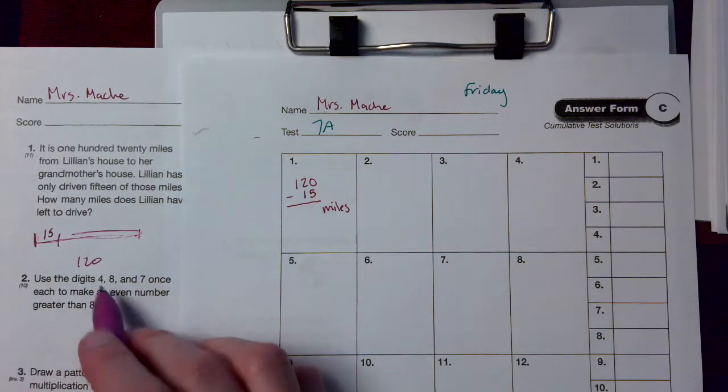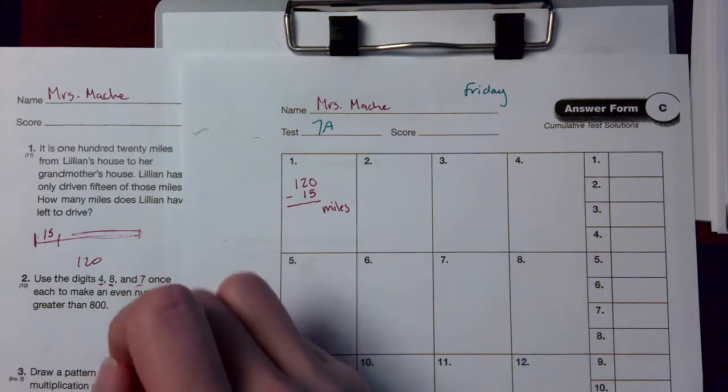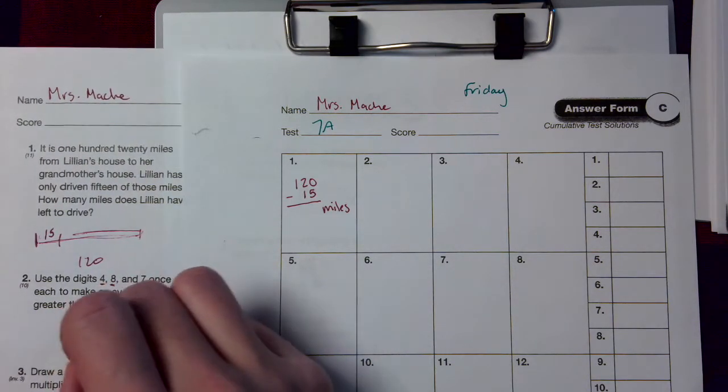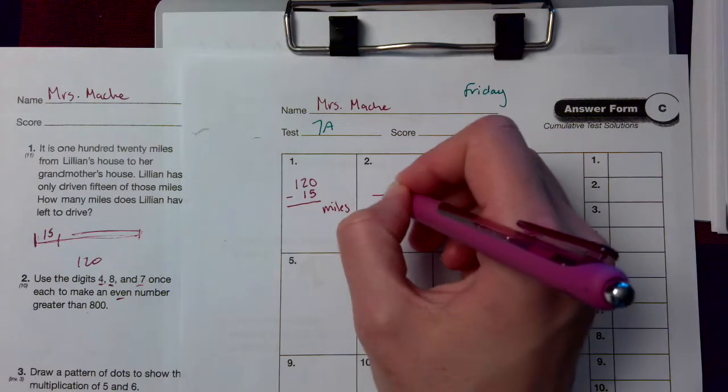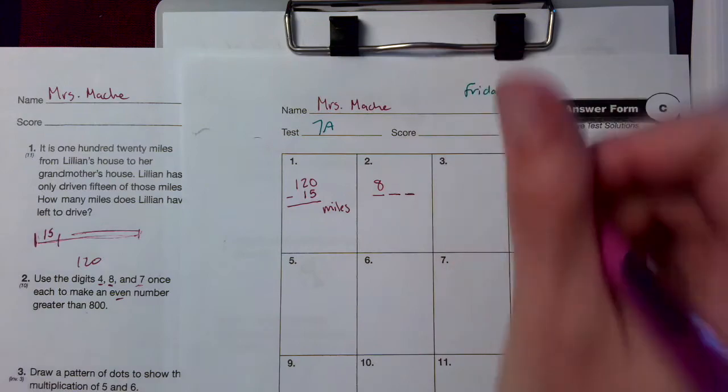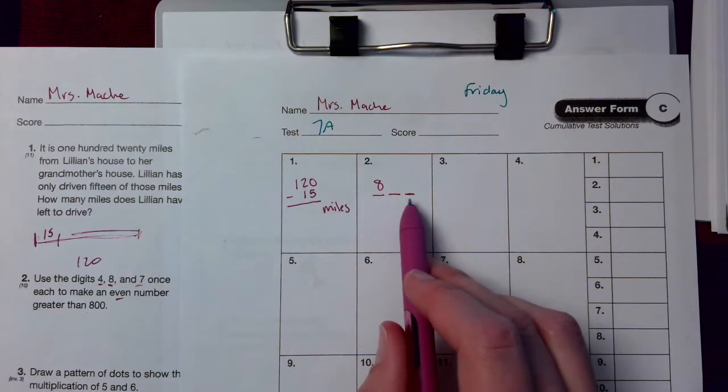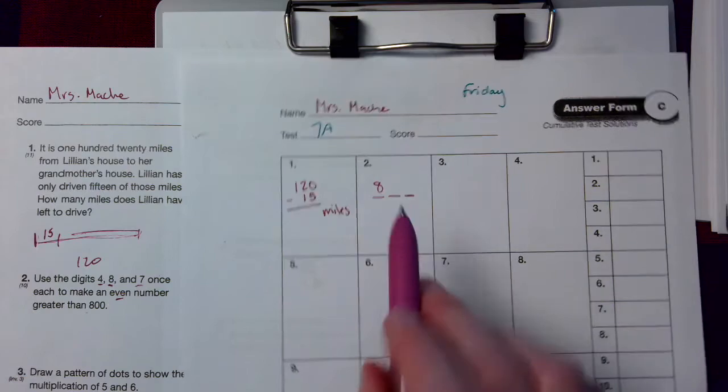Number 2. Use the digits 4, 8, and 7 once each to make an even number greater than 800. Well, if it's got to be greater than 800, I know my 8 has to be first. Now, which digit do I have to put here to make the entire number even? The 4 or the 7? Put the even one there, and then put the digit you have left in your tens place.